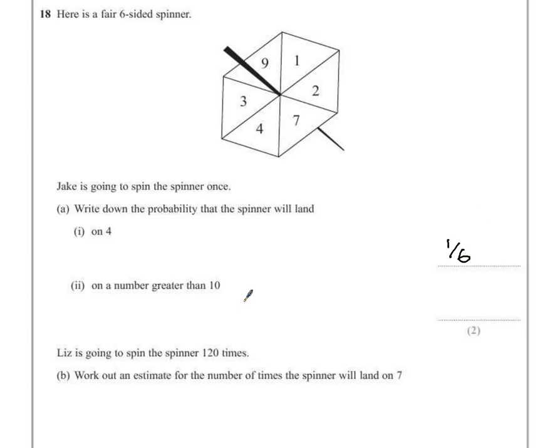Part 2 says write down the probability that the spinner will land on a number greater than 10. Well, there are no numbers greater than 10 on there, so he hasn't got a chance. Therefore, the probability must be 0 out of 6, or just the number 0, for it is an impossible task.